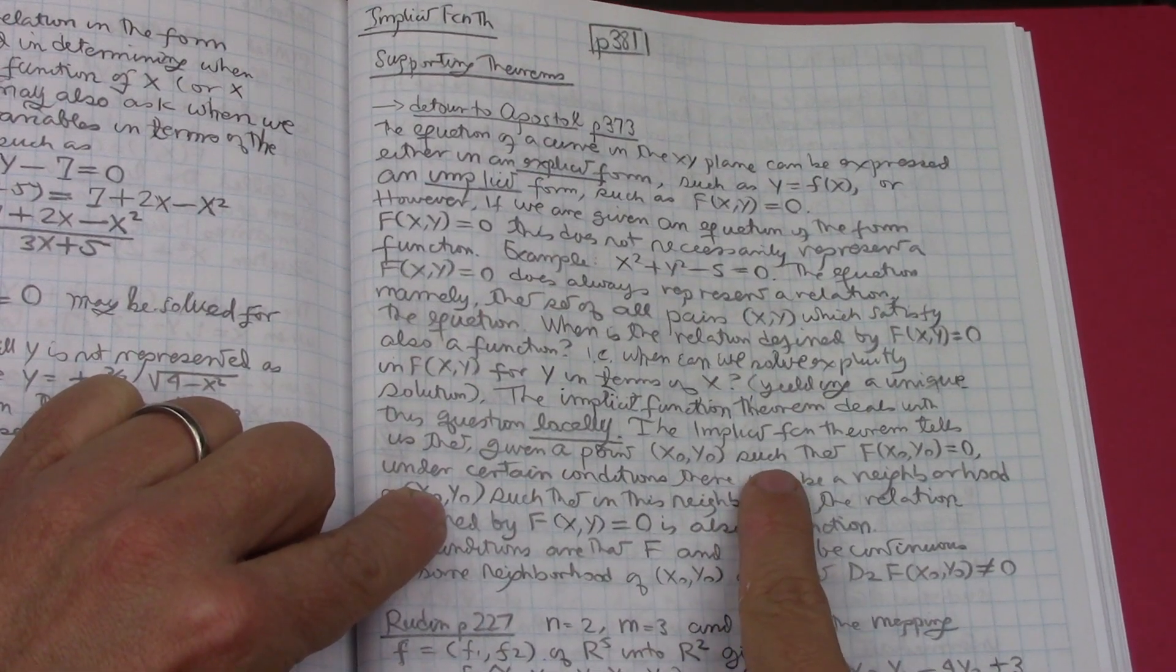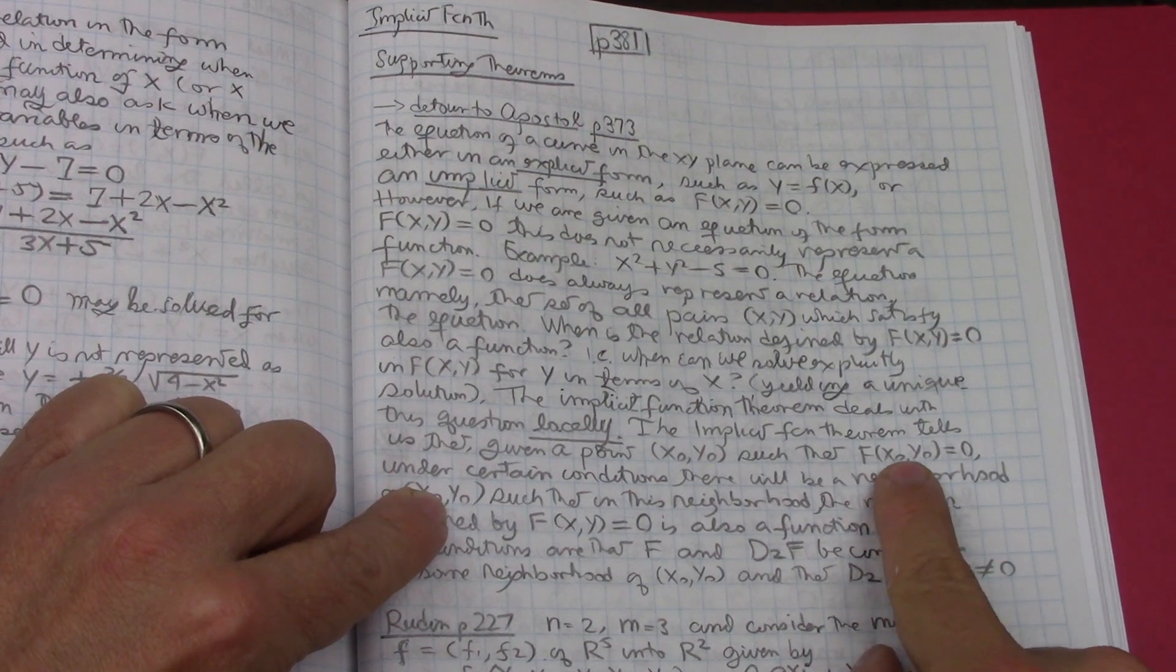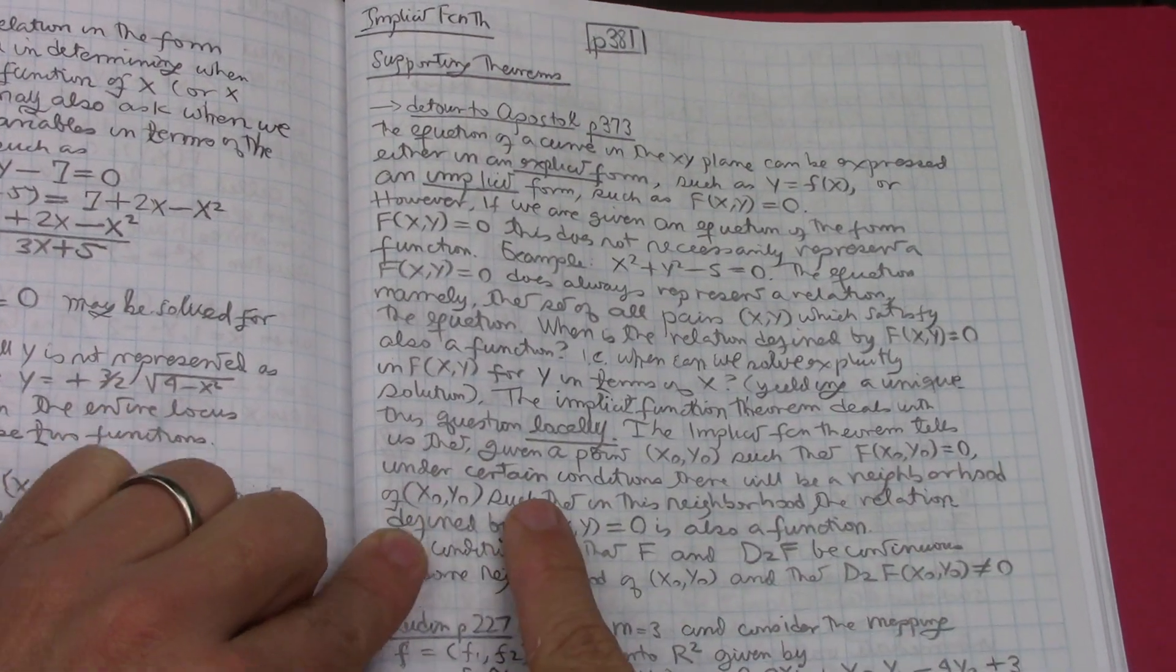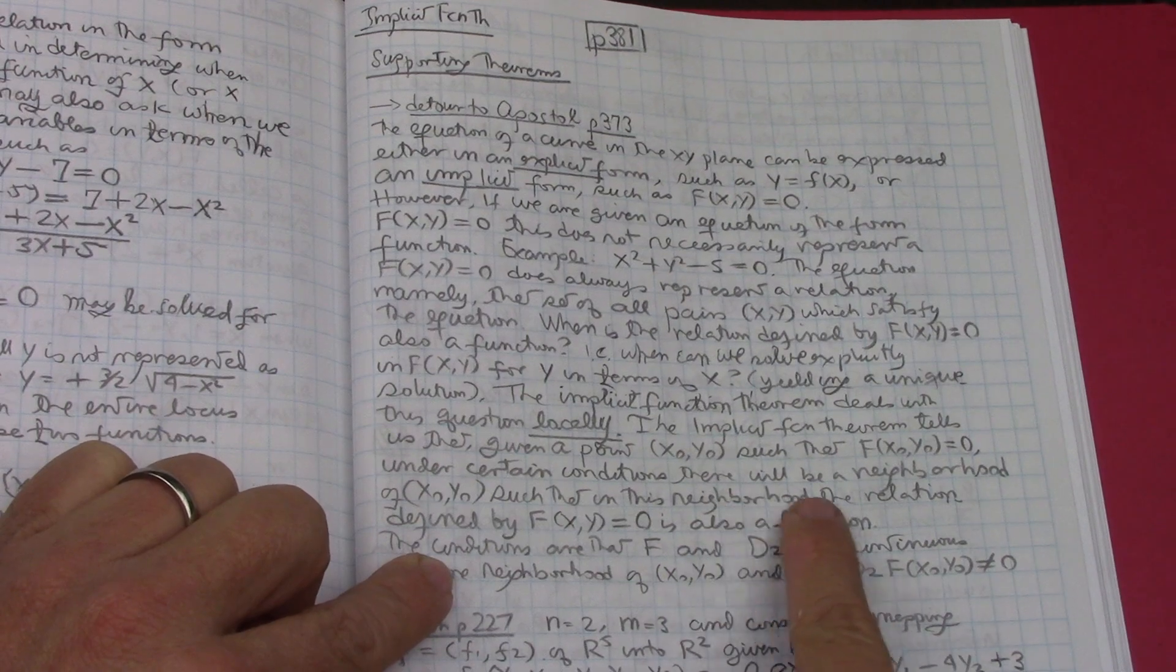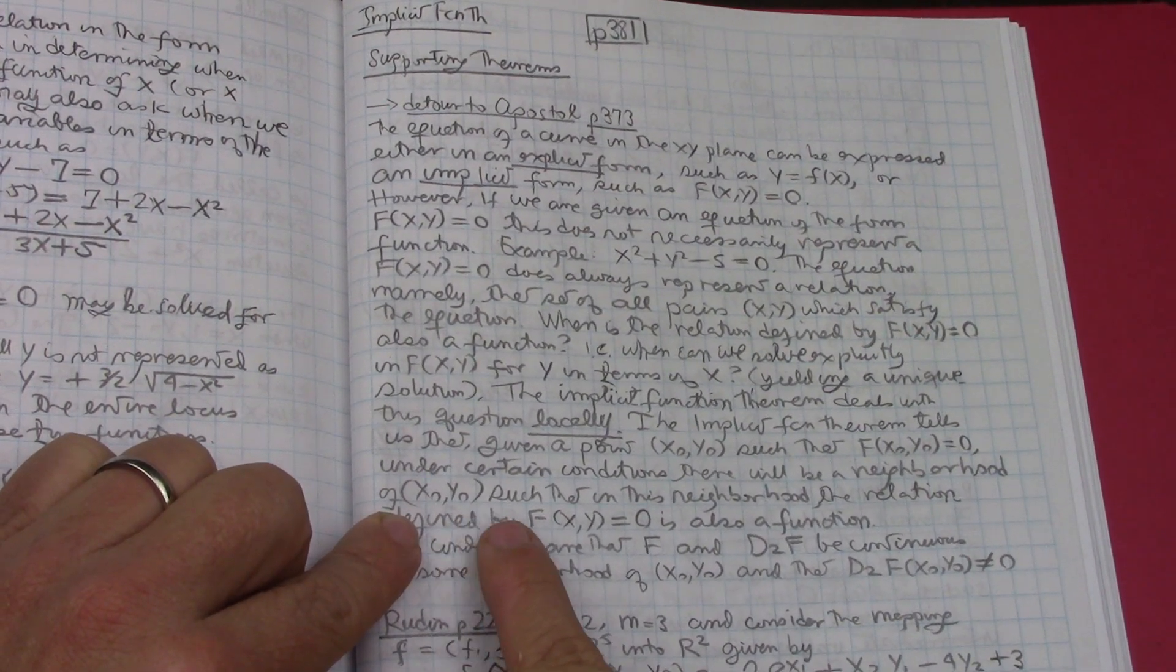The implicit function theorem tells us that given a point (x₀, y₀) such that f(x₀, y₀) equals zero, under certain conditions there will be a neighborhood of (x₀, y₀).